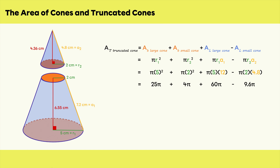To find the total area of the truncated cone, complete the calculations: 25 pi plus 4 pi plus 60 pi minus 9.6 pi. The total area of the truncated cone is 79.4 pi centimeters squared, which is equivalent to approximately 249.44 centimeters squared. I hope the video helped you understand how to calculate the area of cones and truncated cones.